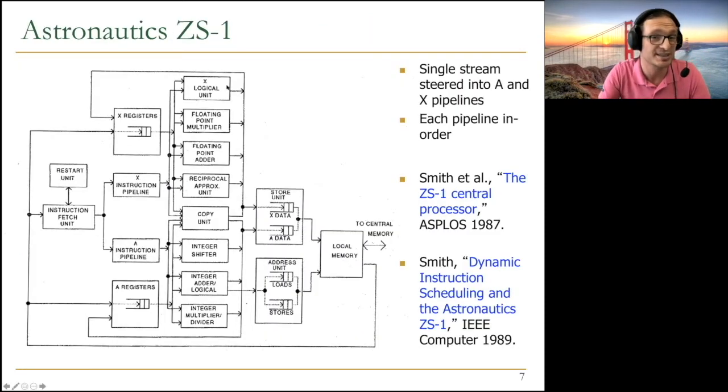This is the Astronautics CS1 processor. What they did was they have a single instruction stream, instruction fetch unit. And they basically separate it dynamically into an access processor, access instruction pipeline, and an execute processor, execute instruction pipeline. Each pipeline is in order. There is no out-of-order execution inside the pipeline. The out-of-order execution capability comes from one instruction pipeline doing something, being asynchronous with the other instruction pipeline until it needs data from that pipeline. You can see that there are access registers and execute registers. These are the queues that you need to communicate between the two streams.